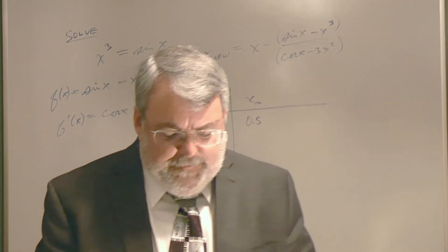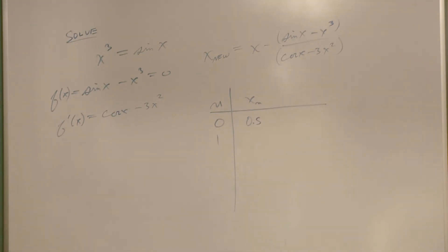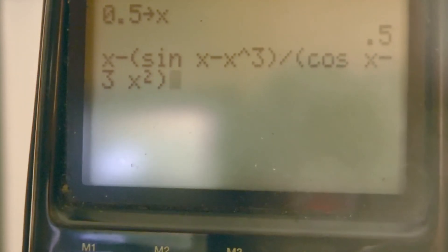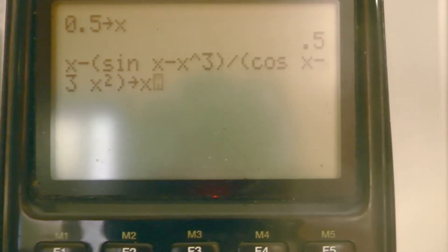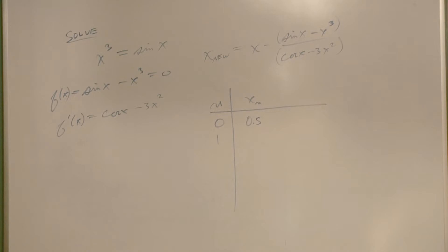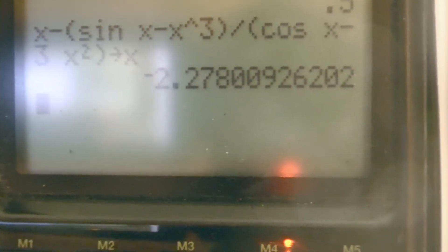So I'm going to do 0.5, store into x, like that. Got that? Now I've got to punch in that Newton's method. So I'm going to do x minus left parentheses, sine x, minus x raised to the third, close parentheses, divided by left parentheses, cosine x, minus 3x squared, close parentheses. Coming into focus. There you go. Did I punch that correctly? I'll take another look, because I can't hear you. You have to talk louder. And now I'm going to hit store x at the end, like that. Sine x, x minus sine x, or x cubed, I believe I got it right. So when I hit equal, I get an interesting answer. Negative 2.27 something.